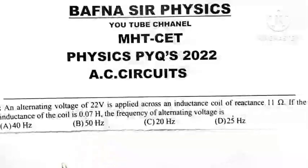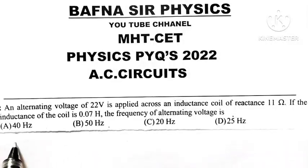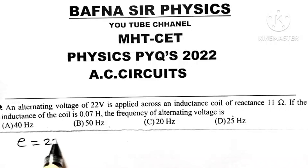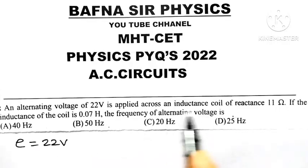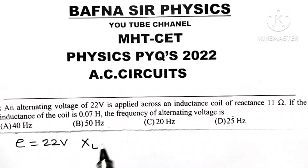An alternating voltage of 22 volts is applied across an inductance coil. The inductive reactance XL is equal to 11 ohms.